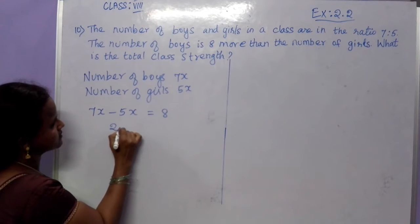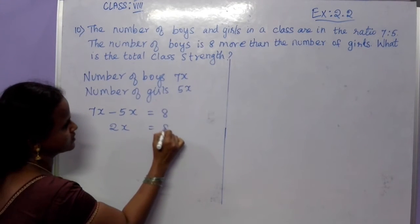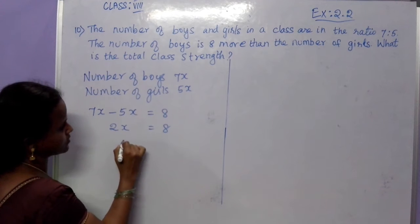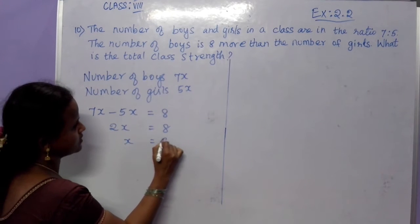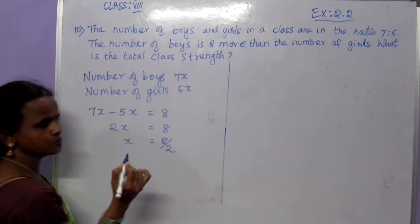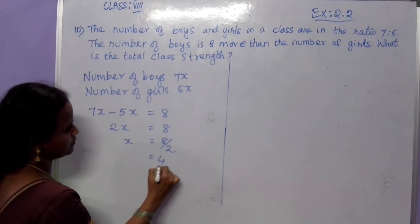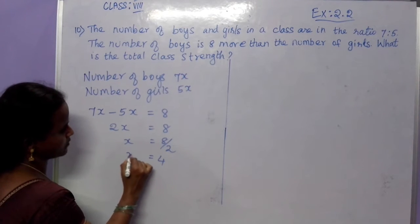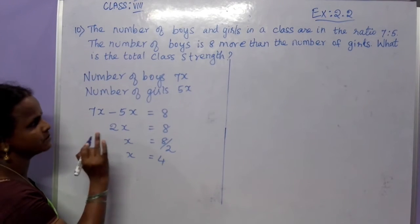Subtract: 2x is equal to 8. So the x value is 8 divided by 2. What is that value? The x value is 4.